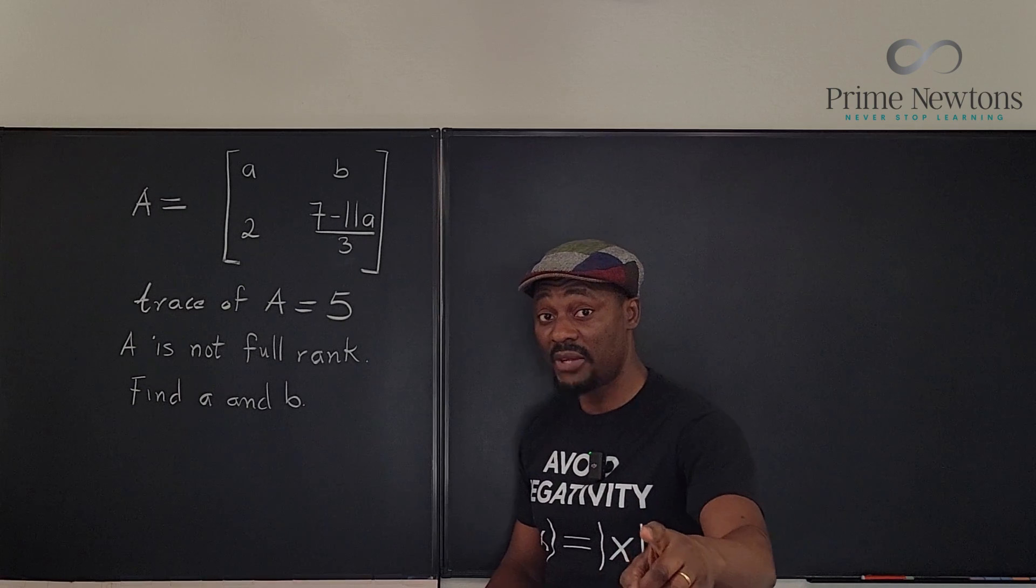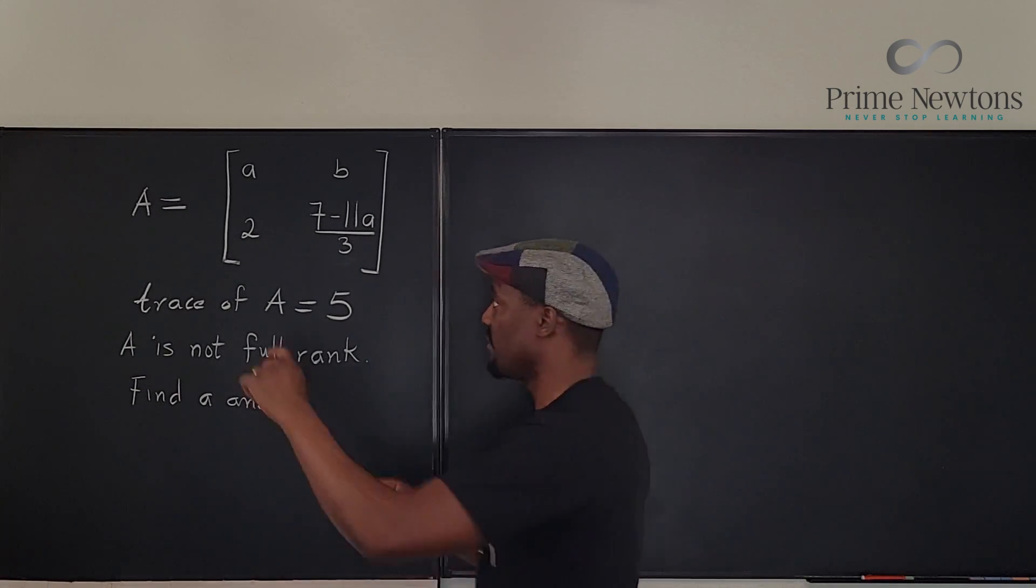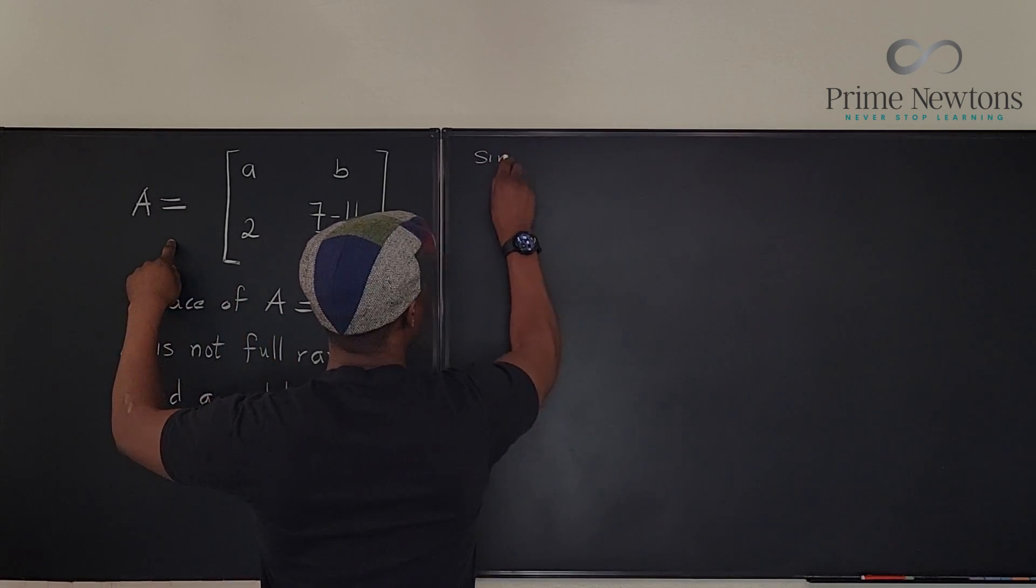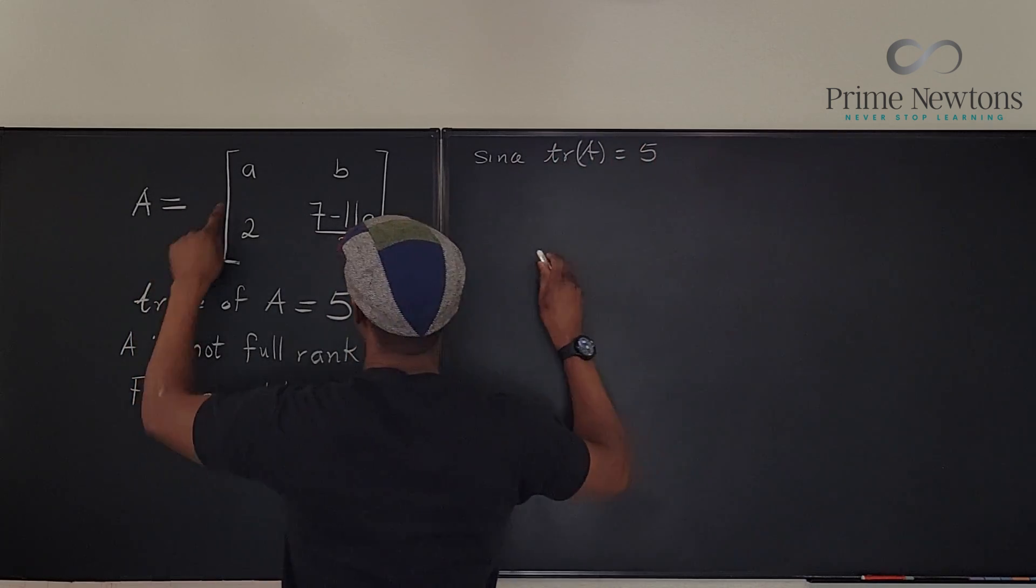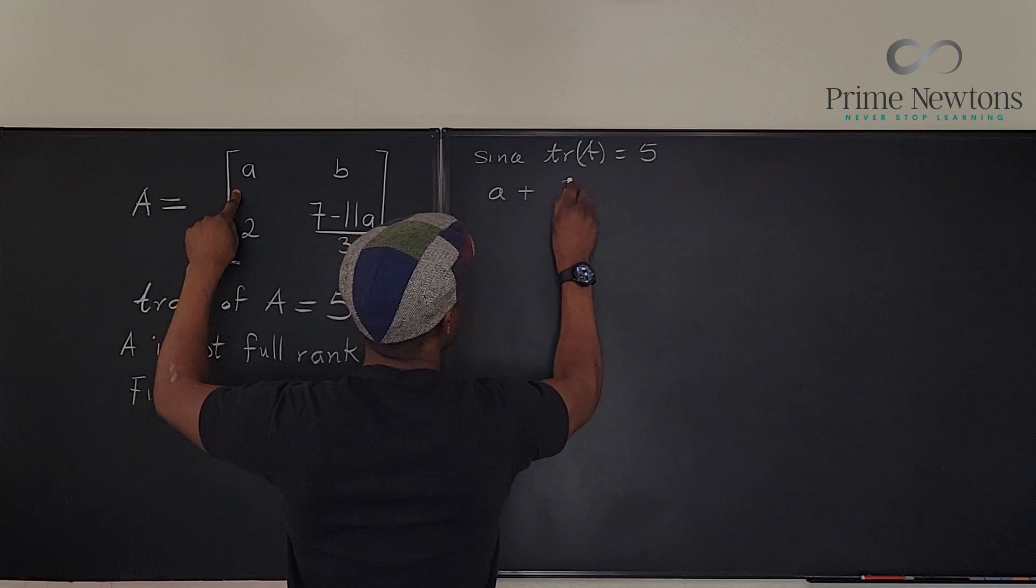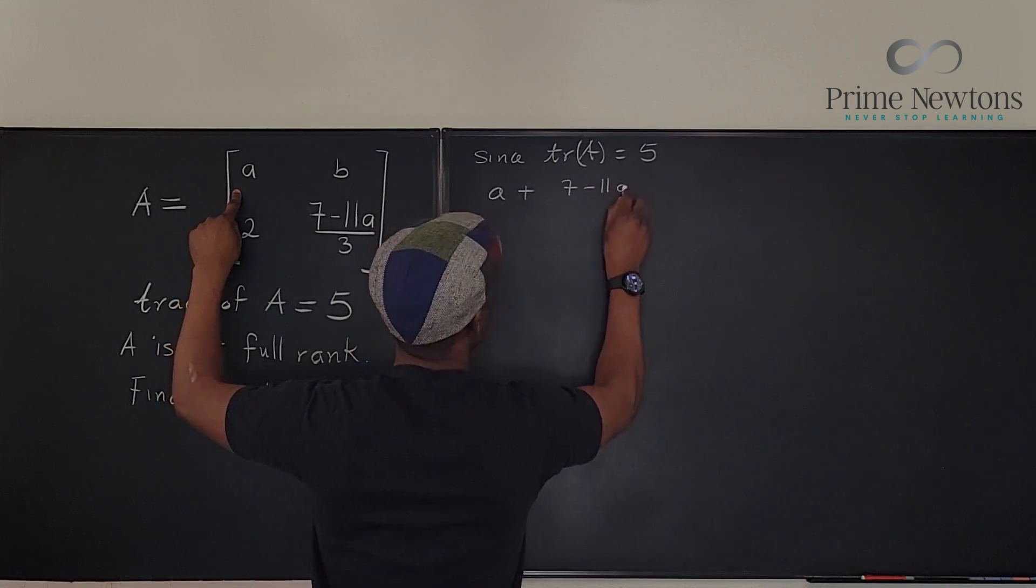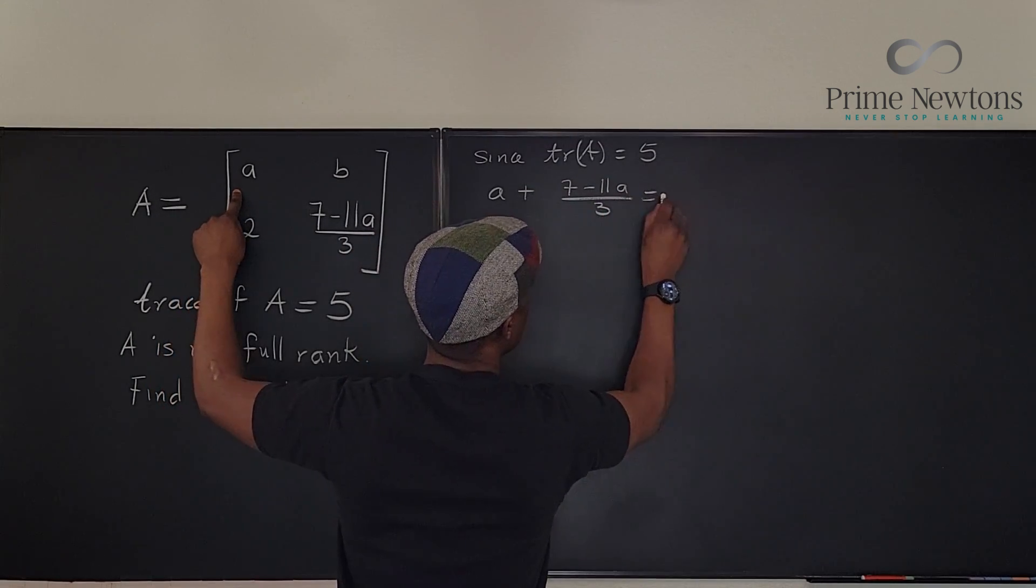So let's use the first information. The trace is equal to five. So since trace of a is equal to five, then it means that a plus seven minus 11a over three is equal to five.